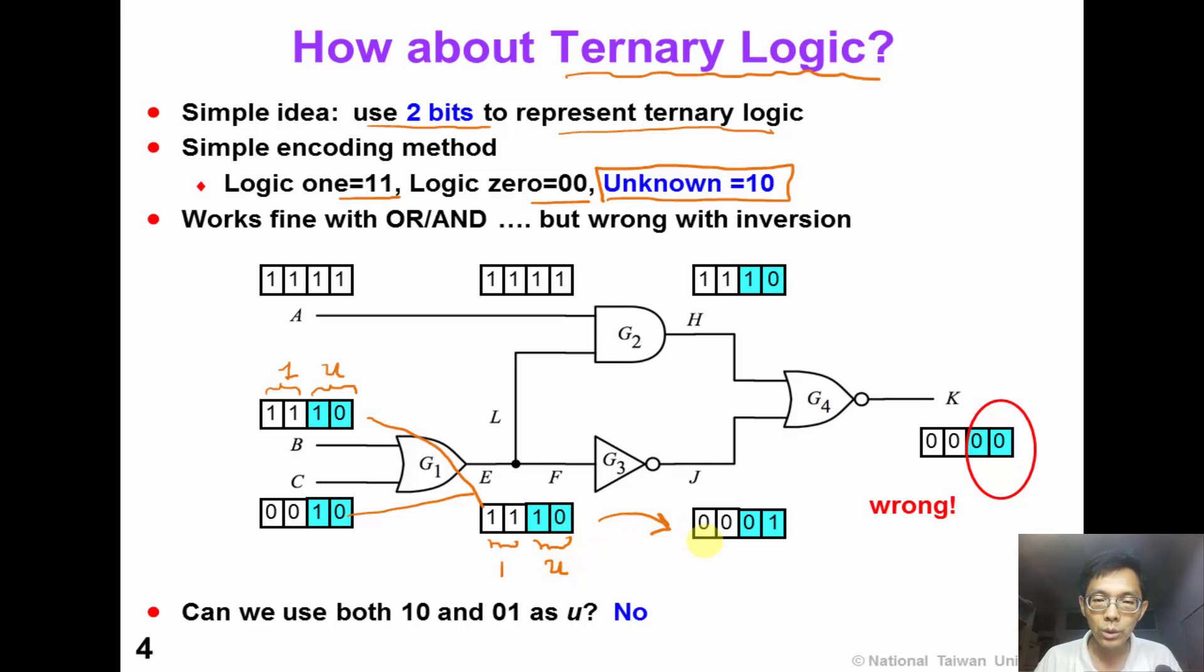After the inversion, we will get 0 0 and 0 1, which is undefined in our encoding system. If we perform 0 1 with 1 0, we will get 0 0, which is a wrong answer.